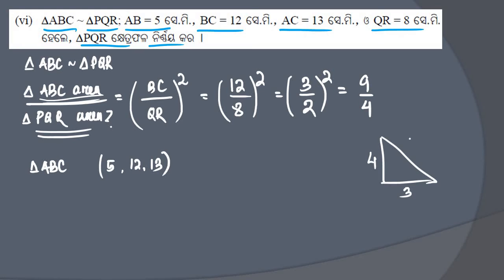Now notice that 5, 12, and 13 is a Pythagorean triplet. Just like 3, 4, 5 is a triplet, similarly 5, 12, 13 is a triplet. We check: 5 squared plus 12 squared equals 13 squared. It satisfies b² plus p² equals h².